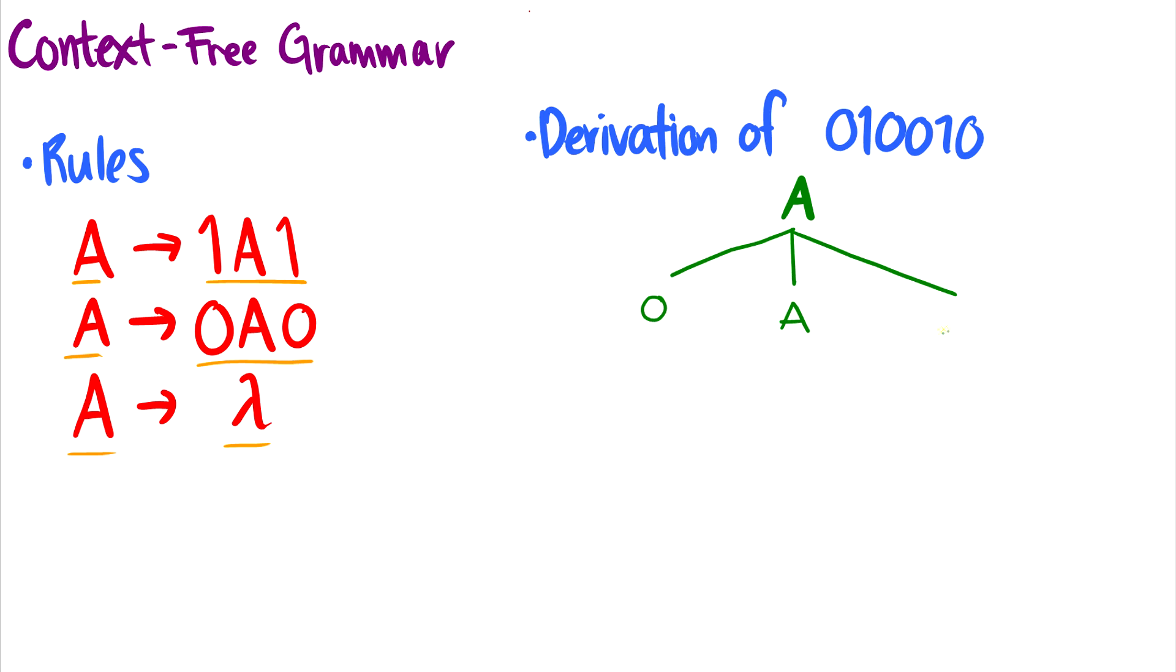So this is ternary branching. We can see on the left there's a 0, then it goes down to A, then it goes down to 0. And then we can recursively use the rules for A. So now if I want 010, I should use A goes to 1A1.